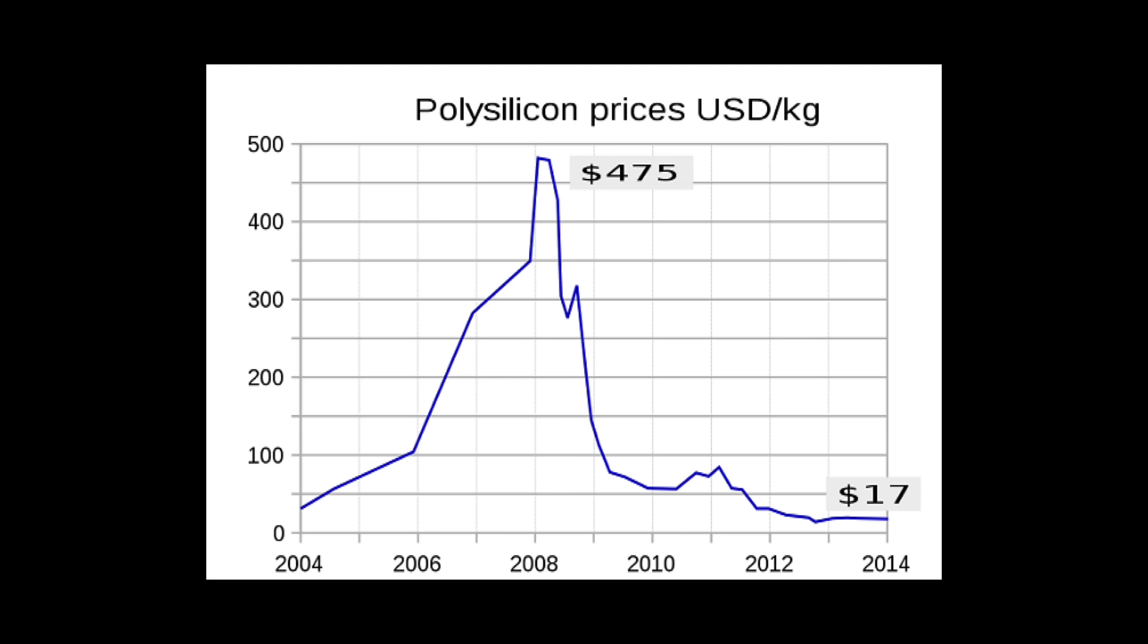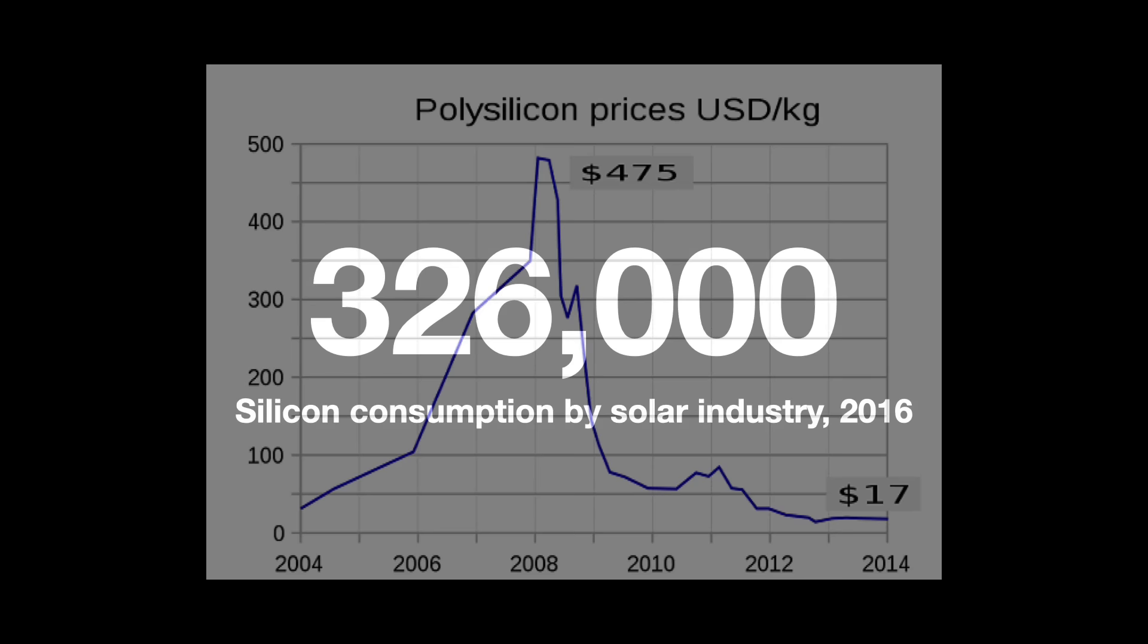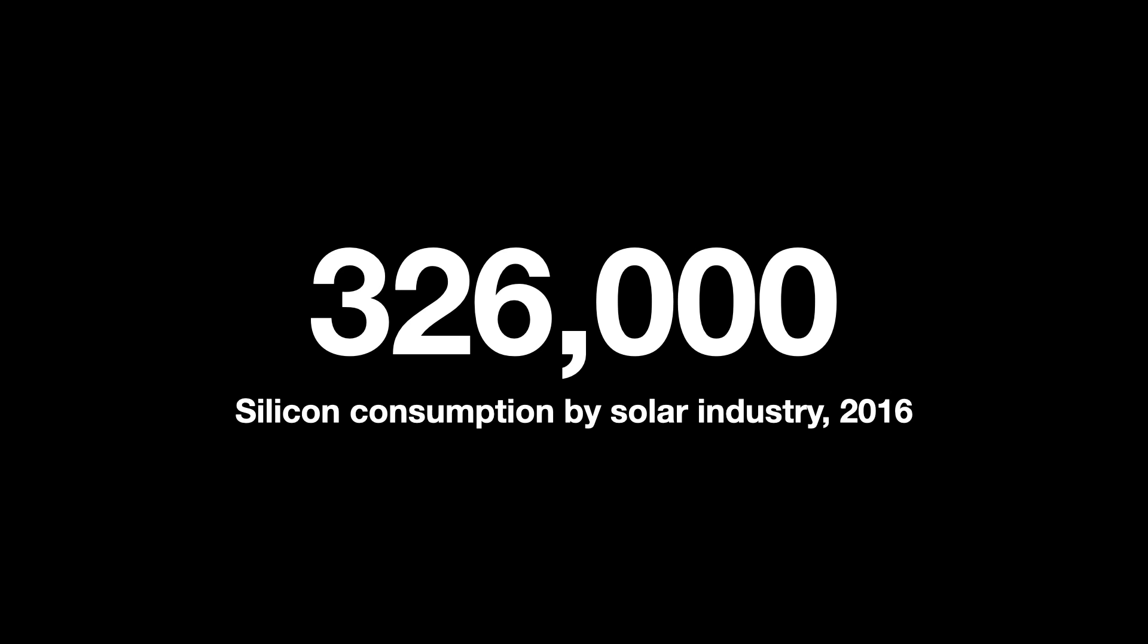By 2016, the solar industry consumed 326,000 metric tons of solar-grade silicon. This is 11 times the annual consumption of the semiconductor industry.